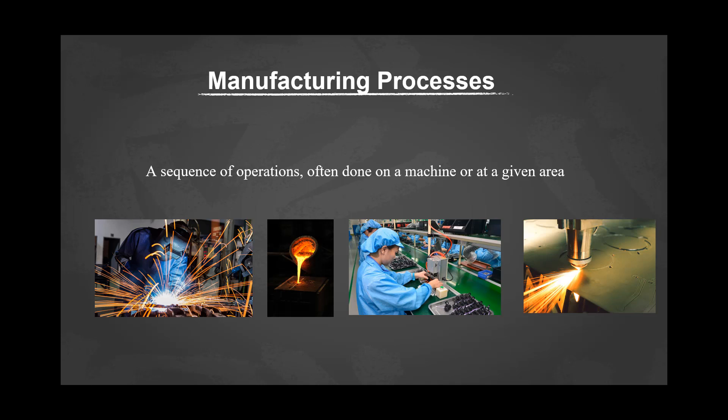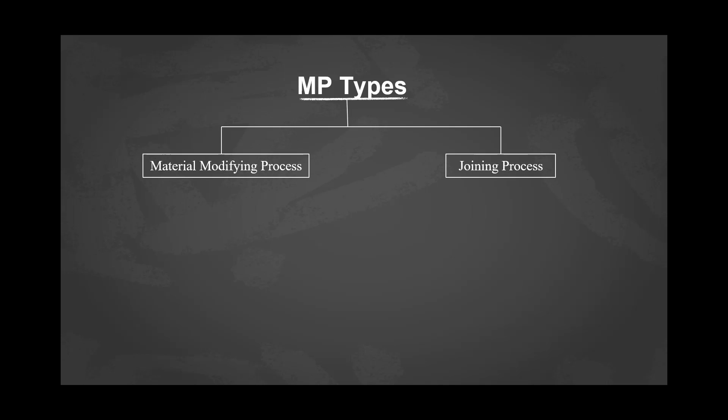Different manufacturing processes, the manufacturability of a material, processing tools, and environmental aspects have become important issues for manufacturing processes. The processes used to convert raw material into finished products perform one or both of two major functions: first is the material modifying process, and second is the joining process.